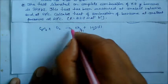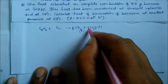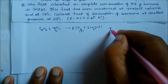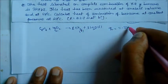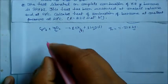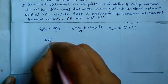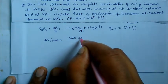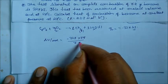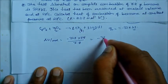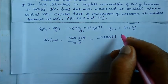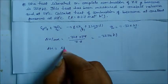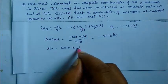Balancing the equation: C₆H₆ plus 15/2 O₂ gives 6 CO₂ plus 3 H₂O. QV is given as minus 327 kilojoule for 7.8 grams. Delta U per mole equals 327 multiplied by 78 divided by 7.8, giving minus 3270 kilojoule per mole.